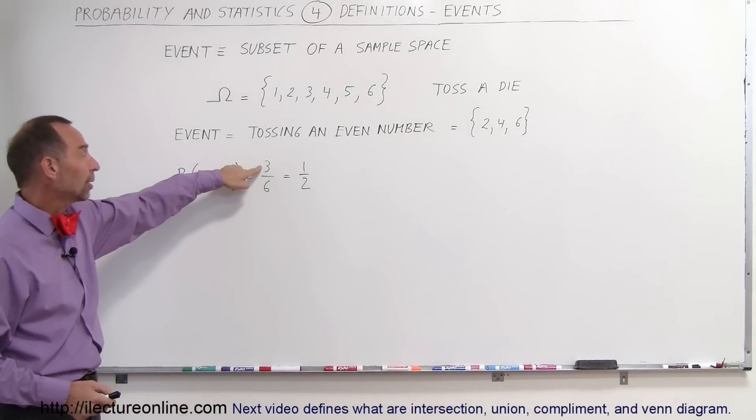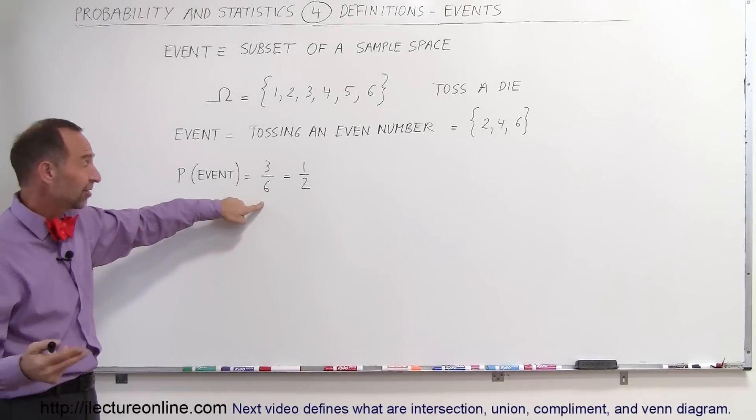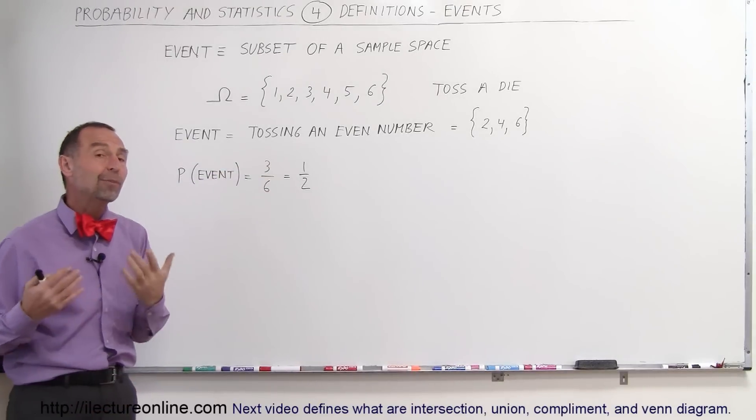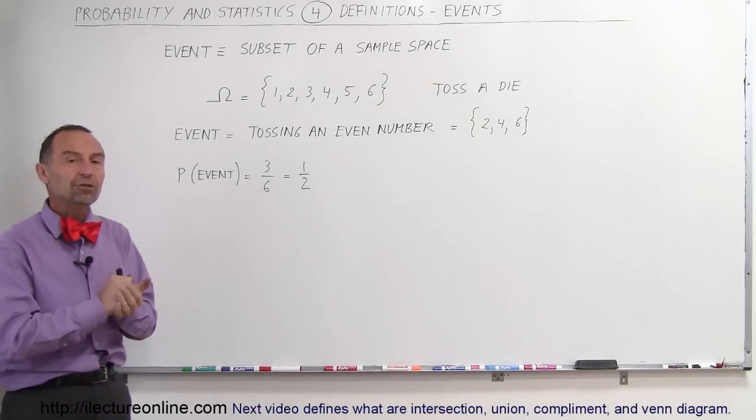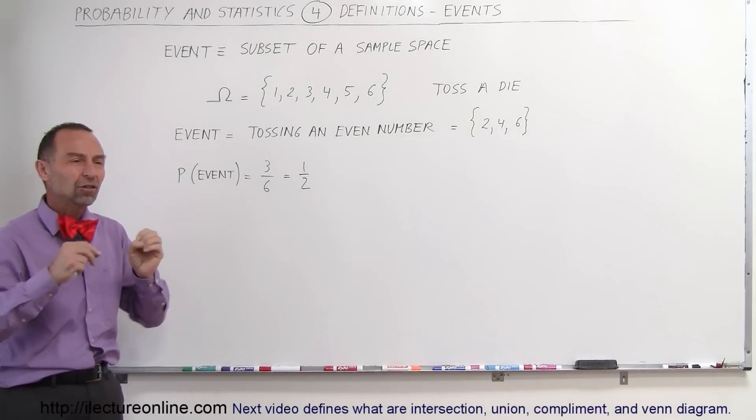Well, there's three possible outcomes out of a total of six outcomes in the sample space. 3 divided by 6 is 1 half, or 50%. There's a 50-50 chance that you'll toss an even number. So the event is a subset.